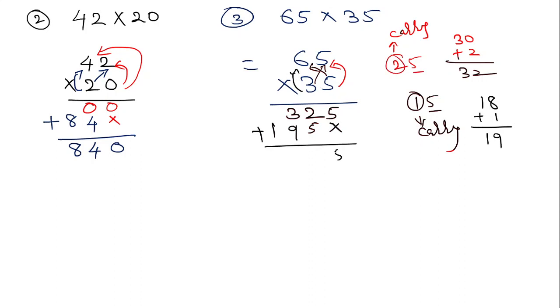I add these numbers: 5. 5 plus 2 is 7. 9 plus 3 is 12, carry 1. I put for carry 1. 1 plus 1 is 2. In this way, we got the answer as 2275. I hope all of you understand how we can solve the different questions.